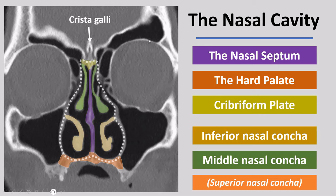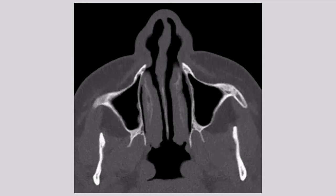We also have a bony structure that is an extension of the ethmoid bone — the crista galli — which divides the olfactory fossa, located here and containing the bulbus olfactorius (the olfactory nerve), into two sides. The crista galli is a bony structure which can sometimes be pneumatized but often is not. The nasal septum divides the nasal cavity in two parts. We see a cartilaginous part anteriorly and a bony part posteriorly — more about that in the next slide.